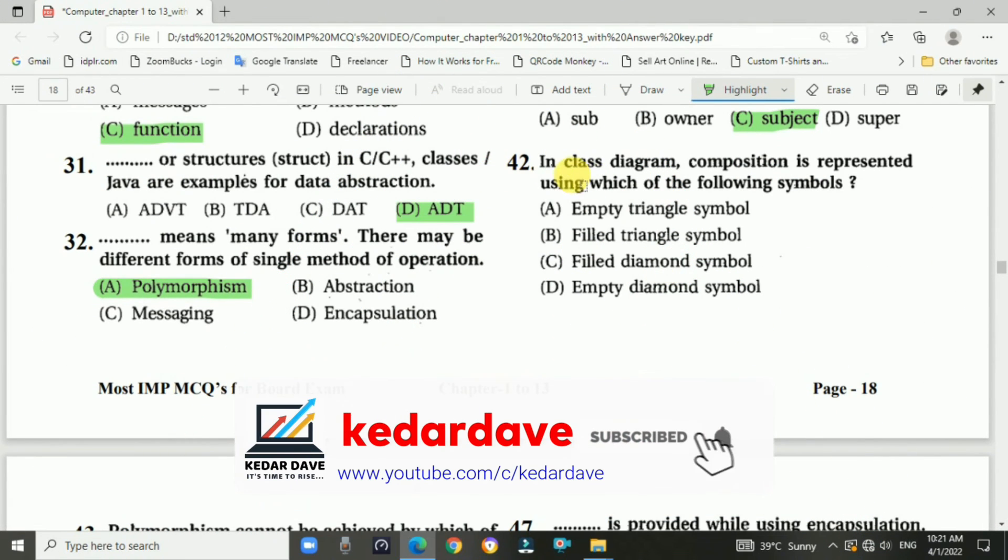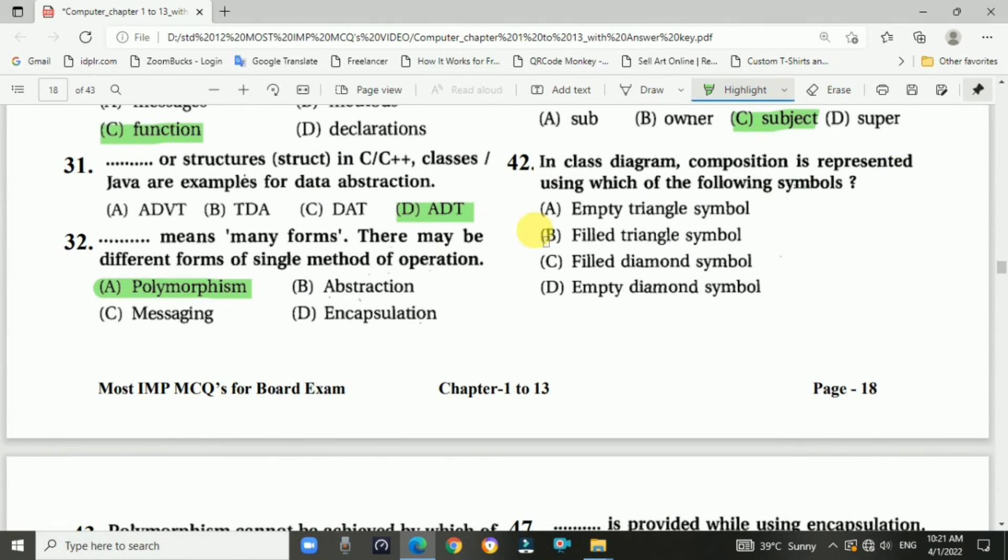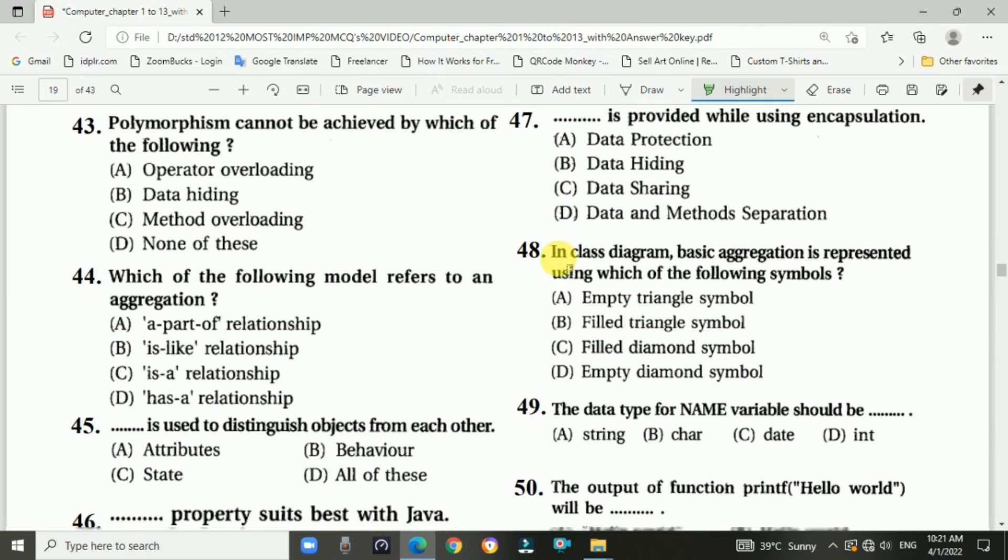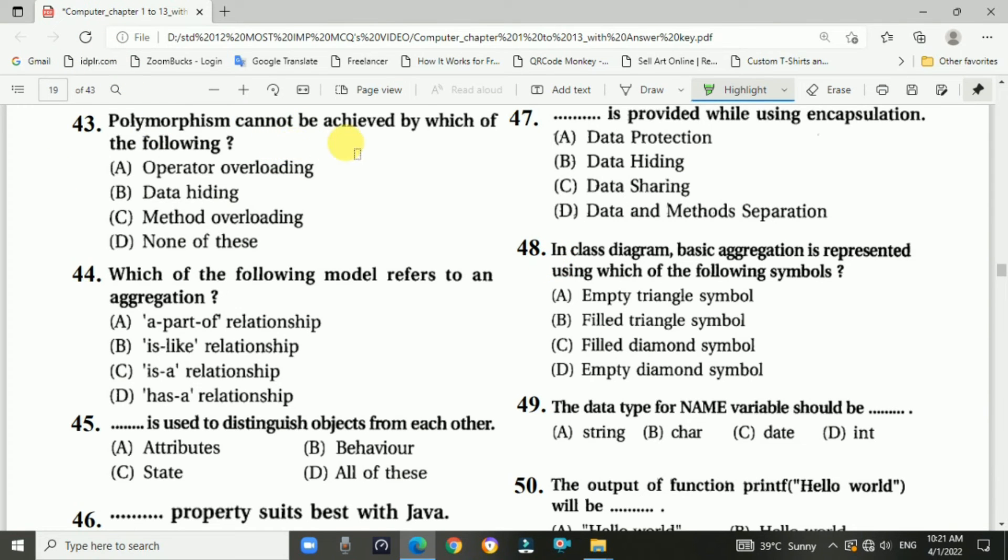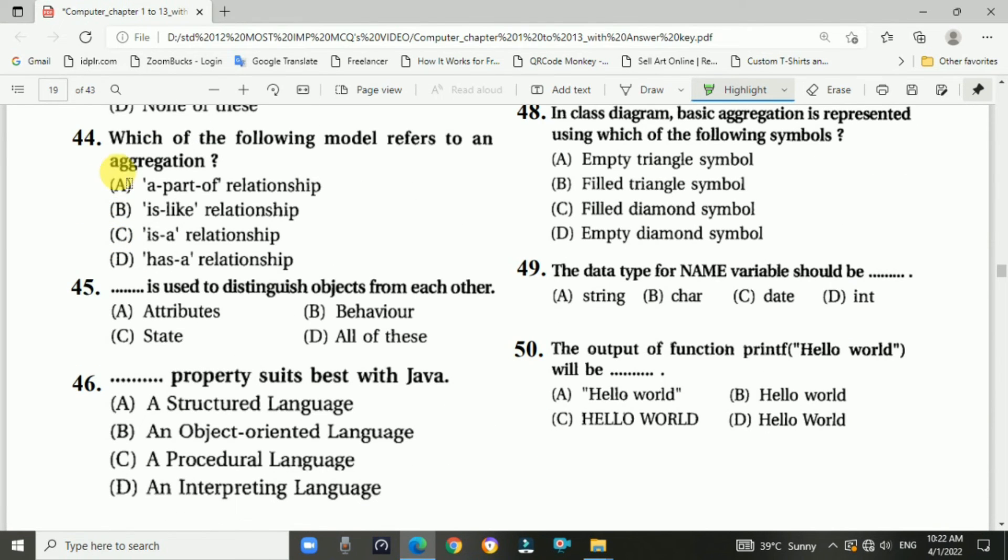Question number forty-two: In class diagrams, composition is represented using which of the following symbols. Answer is C, filled diamond symbol. Question forty-three: Polymorphism cannot be achieved by which of the following. Answer is B, data hiding. Question number forty-four: Which of the following model refers to an aggregation. Answer is A, part-of relationship.